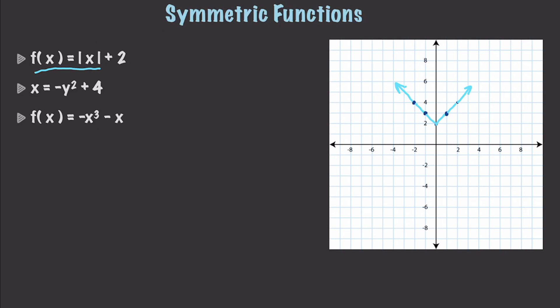What you get whenever you have an absolute value is that the absolute value of x is always going to equal the same value for y. It's important to understand and recognize symmetry because it's going to make it easier for you to plot equations. To restate this another way, in regards to functions or equations that have absolute value, you know that you will have one if you can replace x with negative x and still get the same y value.